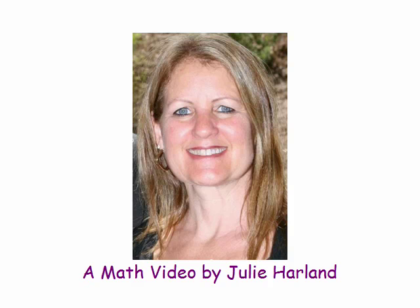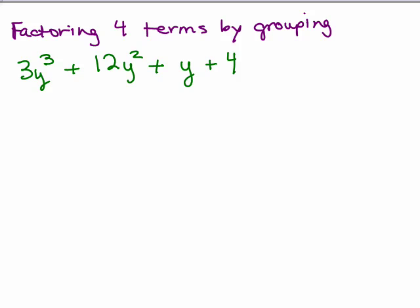Math is cool and you can do it. We're going to be factoring four terms of a polynomial by a grouping method. So we have four terms here and the first thing we always look for is if there's a common factor in all the terms of the polynomial, but there is not.